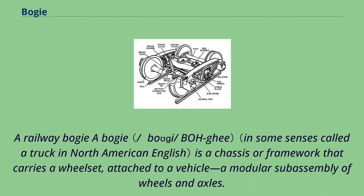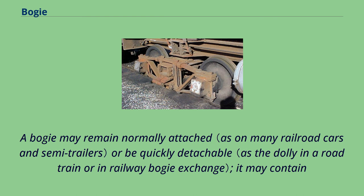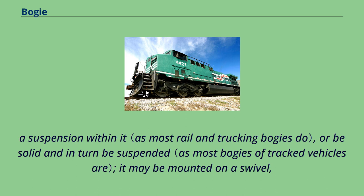A railway bogey is a chassis or framework that carries a wheel set, attached to a vehicle — a modular sub-assembly of wheels and axles. Bogeys take various forms in various modes of transport. A bogey may remain normally attached or be quickly detachable. It may contain a suspension within it, or be solid and in turn be suspended.